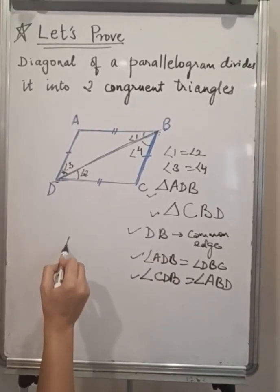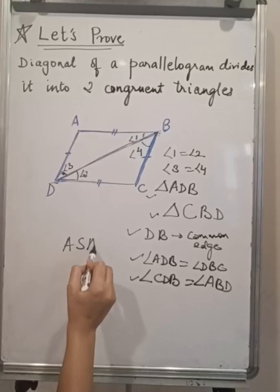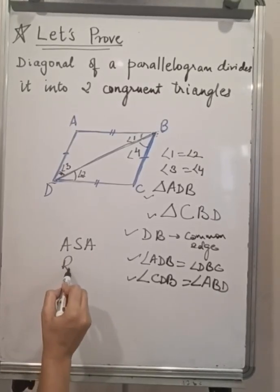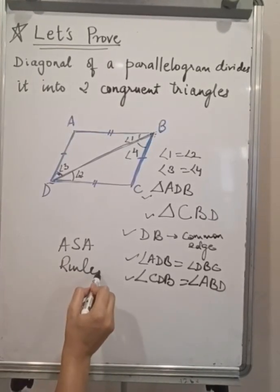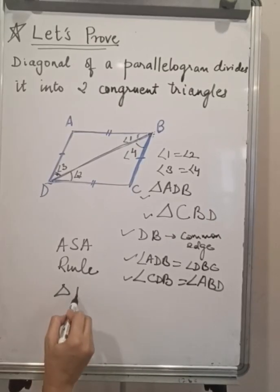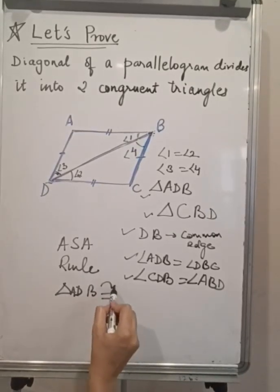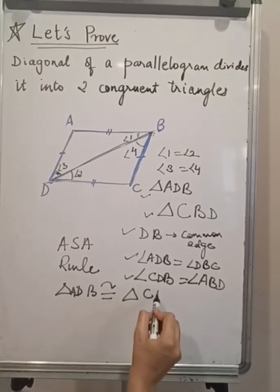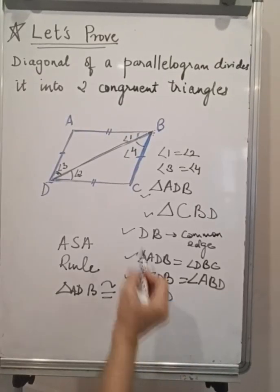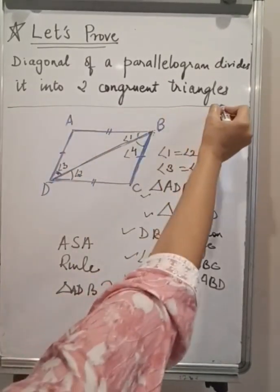By using ASA congruence rule, we can say that triangle ADB is congruent to triangle CBD. Hence, this theorem is proven.